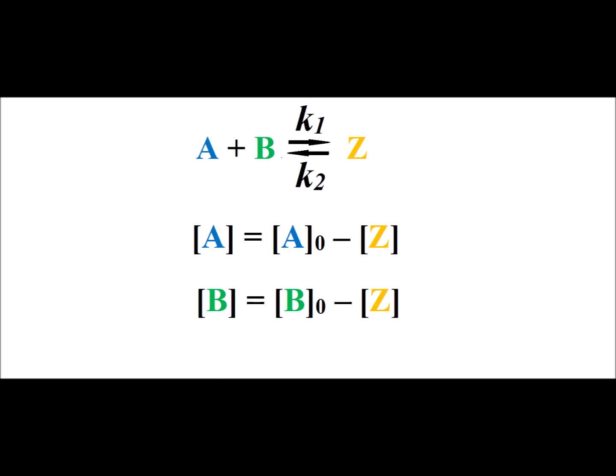Hello. In this video, we are going to derive an expression for the relaxation time of a reaction of the type a plus b giving z, where k1 is the rate constant for the forward reaction, and k2 is the rate constant for the reverse reaction.